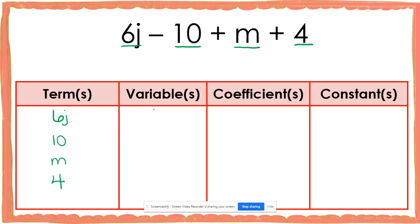I notice that I also have two variables: the variable j and the variable m. If I have two variables, that means I'm also going to have two coefficients. I notice that j is being multiplied by 6, so the coefficient for j is going to be 6. Now when I look at m, it doesn't look like it's being multiplied by anything. But anytime you have a variable, even if it looks like there's no coefficient, there is always a coefficient. If I have m, that's the same as saying 1 times m, because 1 times m gives me m. Which means there is an invisible coefficient of 1 on my m.